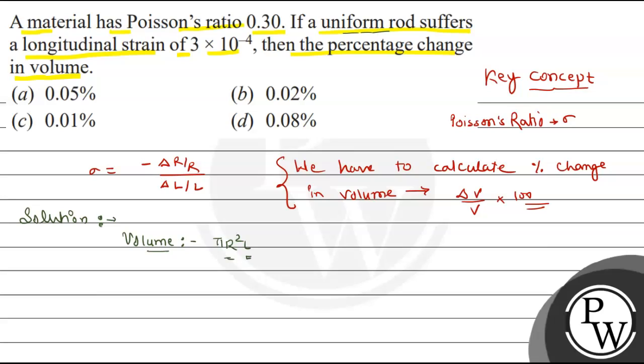Volume is pi R square L. Therefore, del V by V equals to two times del R by R plus del L by L.